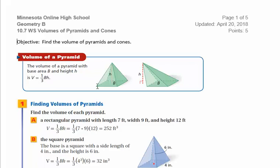The volume of a pyramid is found by taking the area of the base, big B, times the height. The height is the height of the pyramid, not the slant height of one of the sides. So if it's a right pyramid going straight up, the height is measured from the center of the base up to the vertex.